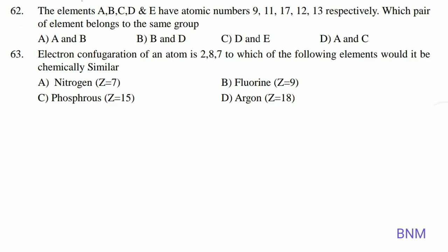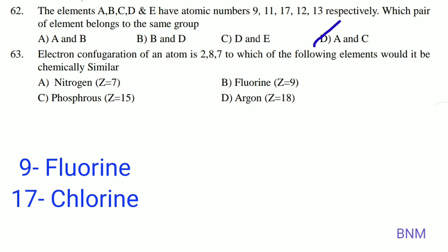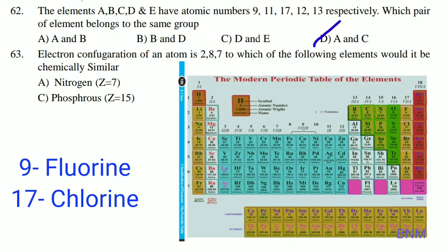The elements A, B, C, D, and E have atomic numbers 9, 11, 17, 12, and 13 respectively. Which pair belongs to the same group? Atomic numbers 9 and 17 belong to the same group, so A and C is the answer. Next, the electronic configuration of an atom is 2, 8, 7 — this is atomic number 17, which is chlorine. Chemically similar properties are found in fluorine, so B and A is the right answer.